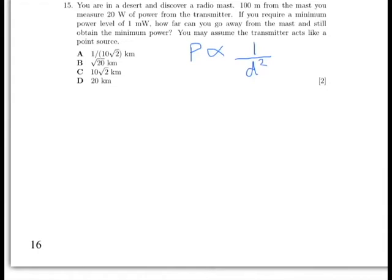So we can use proportionality again here to say that P equals a constant divided by D squared. So let's just work with P1 and D1 to start with. So rearrange that to get k equals P1, D1 squared, where P1 was 20 watts.